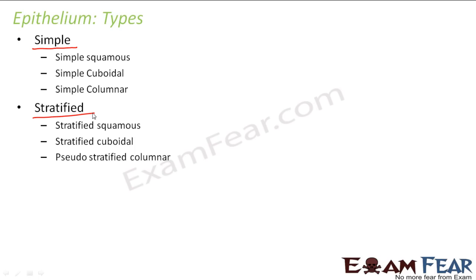So what is a simple epithelium? If the name is simple, it is going to be something simple. Simple epithelium means it will consist of only one layer — a single layer epithelium is simple epithelium. Simple means single. But whenever we have multiple layers of cells, then we have stratified epithelium.